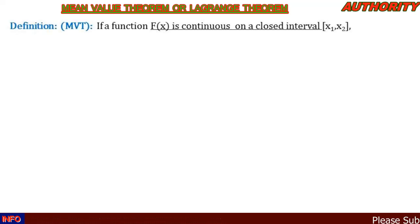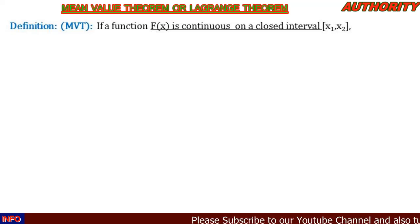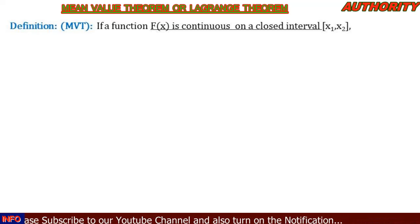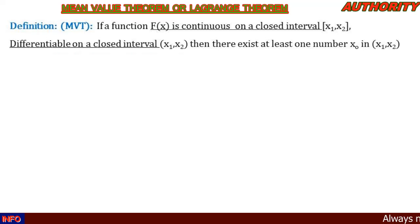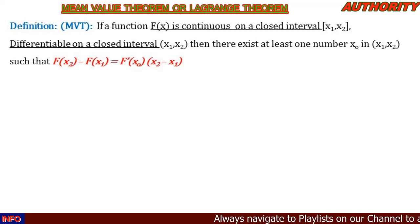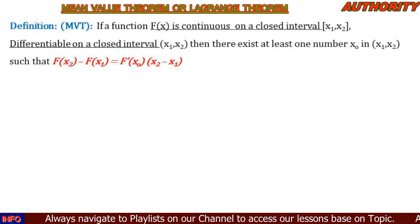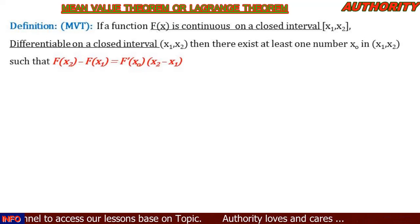Definition: The Lagrange theorem says if the function f(x) is continuous on a closed interval [x1, x2] and is differentiable on an open interval (x1, x2), then there exists at least one number x0 in the interval x1 and x2 such that f(x2) minus f(x1) is equal to f prime of x0 multiplied by x2 minus x1.